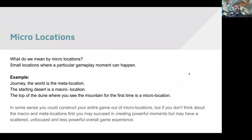So microlocations — what do I mean by microlocations? I mean small locations where a particular gameplay moment can happen. For example, in Journey, the whole world and all of the different biomes you move through are the meta location. The desert that you start out in would be a macro location, and then the top of the sand dune where you first see the mountain that's your final destination — that would be a micro location.